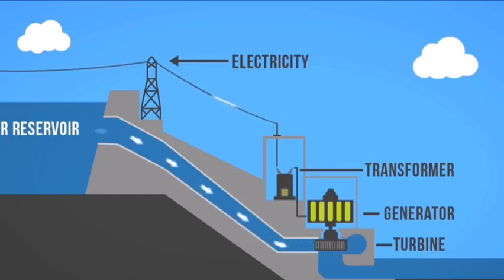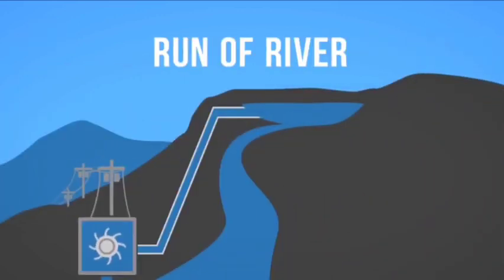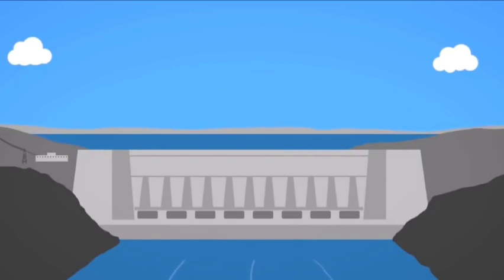The High Dam was finished in 1971. It uses water from the River Nile to generate electricity. The location made this a good place to build the dam because it could stop the River Nile from flooding.